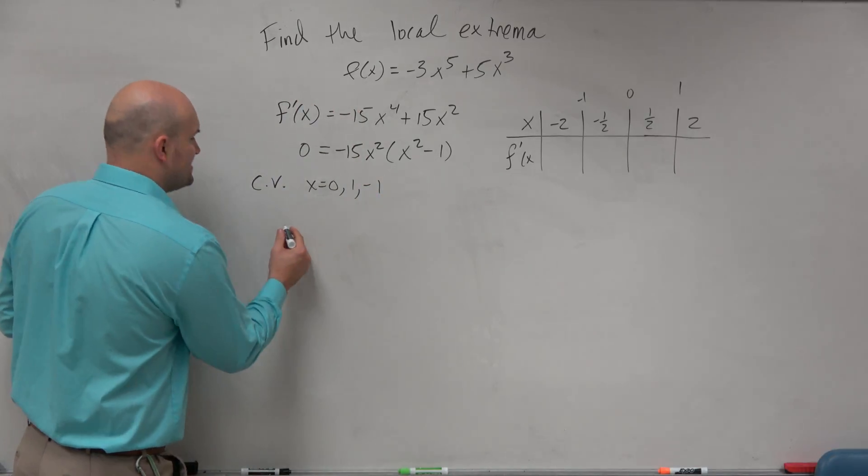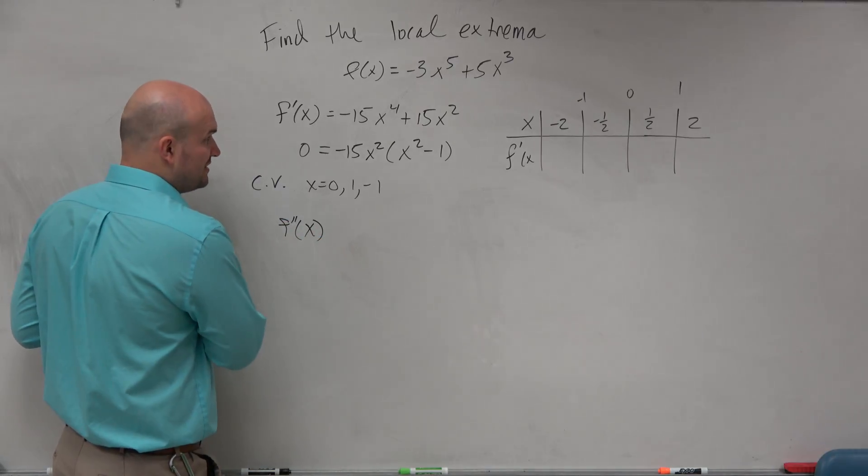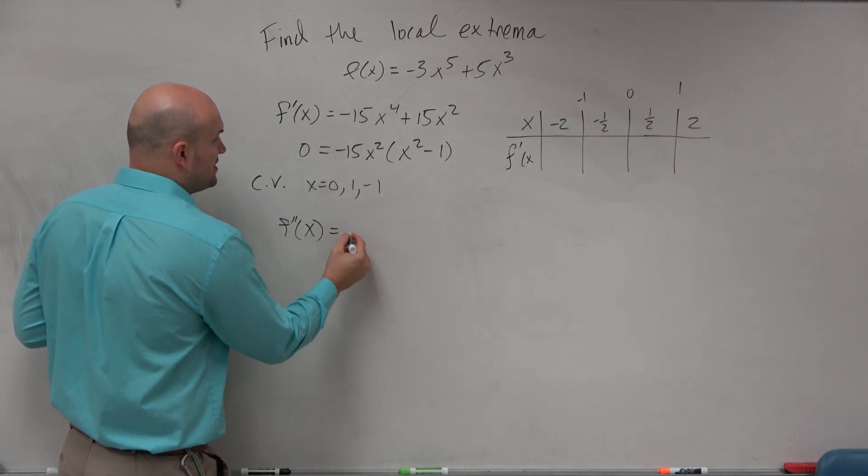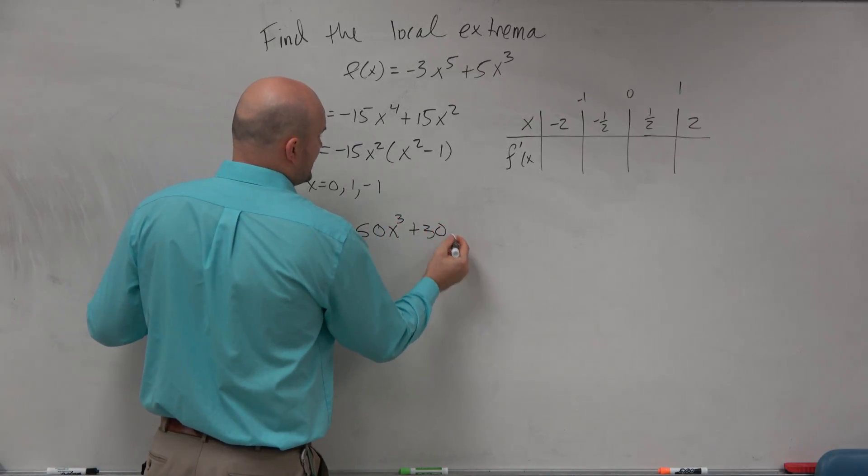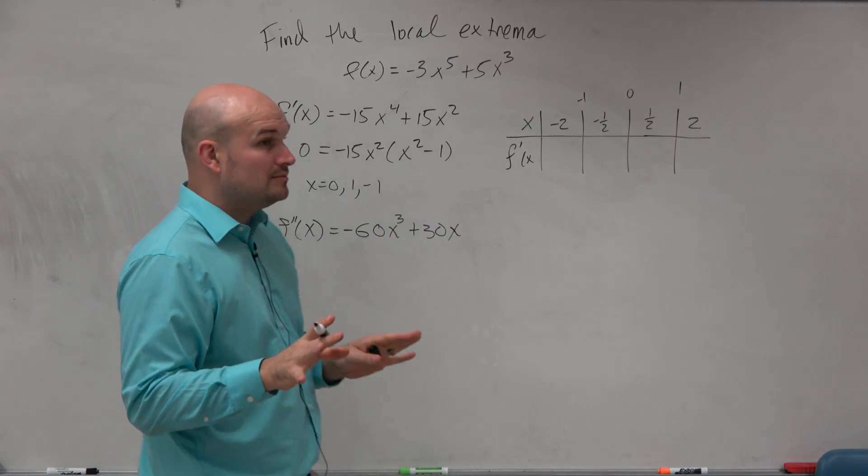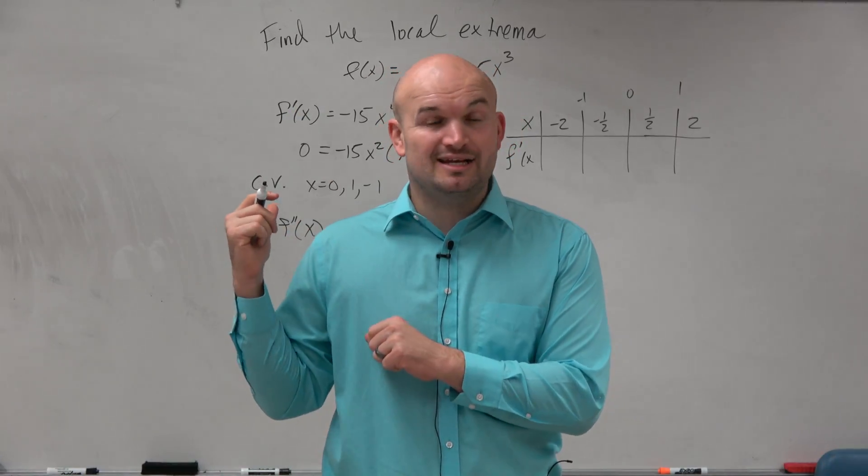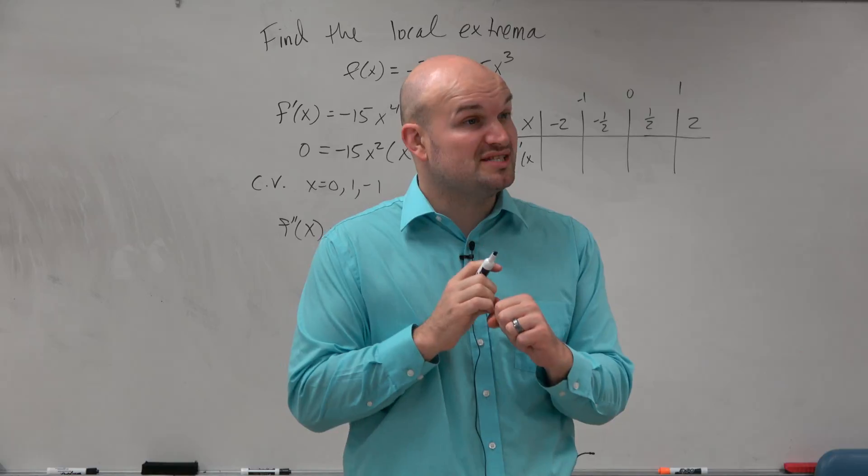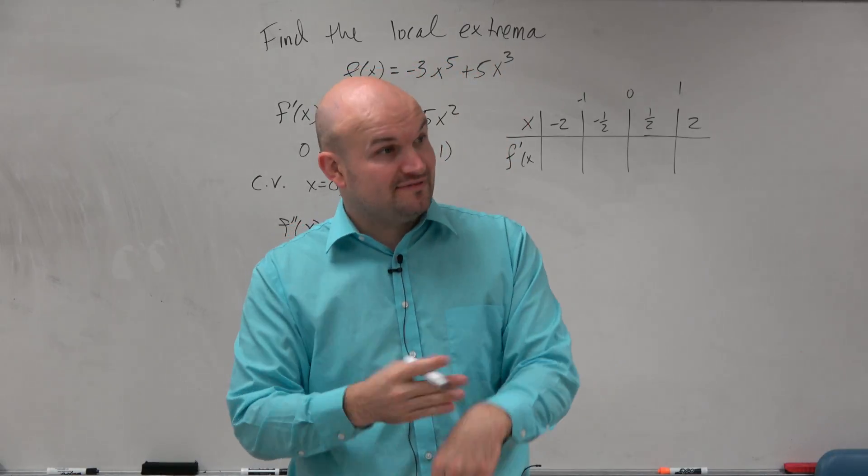So to apply the second derivative test, all we're simply going to do is take the second derivative. When we take the second derivative, we have negative 60x cubed plus 30x. Now, remember if we set that equal to 0, then we get the possible points of inflection where the concavity changes from concave down to concave up.